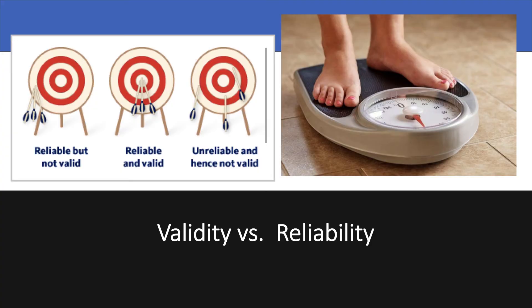Here's an illustration to help you understand the difference between validity and reliability. Looking at the archer on the left: if someone misses the bullseye but is consistent in the placement of the arrow, that's a sign of reliability — it's consistent — but it's not valid, not accurate. The middle archer indicates a reliable and valid shot: three consistent shots all hitting the bullseye — reliable because it's consistent, valid because it's hitting the bullseye and is accurate. The archer on the far right indicates an unreliable and hence invalid shooting range, with all three arrows in different directions.